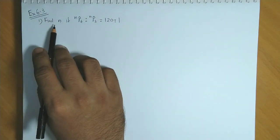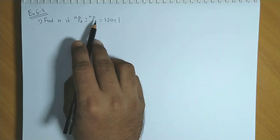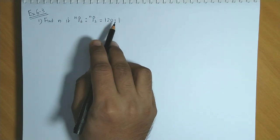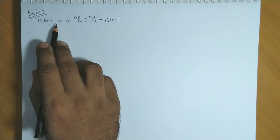We now look at exercise 6.3 question number 1. Find n if NP6 is to NP3 is equal to 120 is to 1. Here we find the value of n.